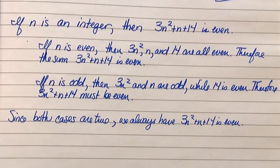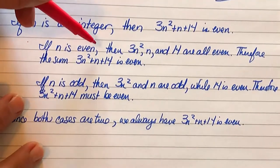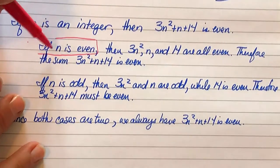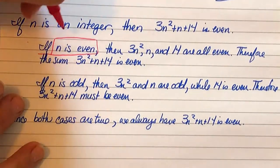And I conclude by saying since both cases are true, we always have that 3n squared plus n plus 14 is even. So now what I want to do is declare that this piece right here, n is even, will be p.